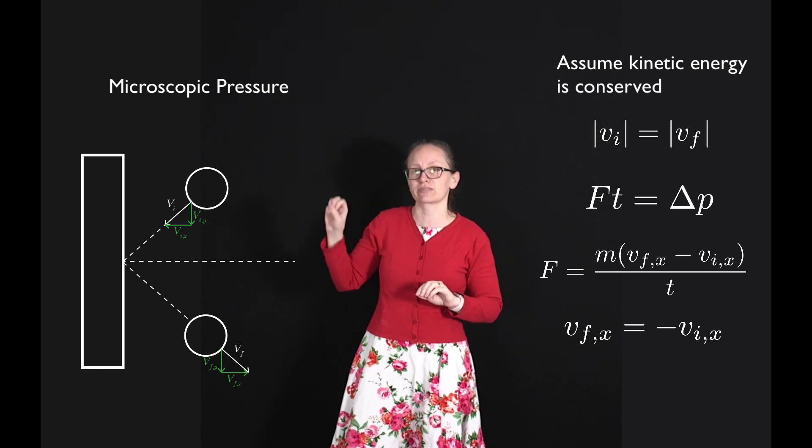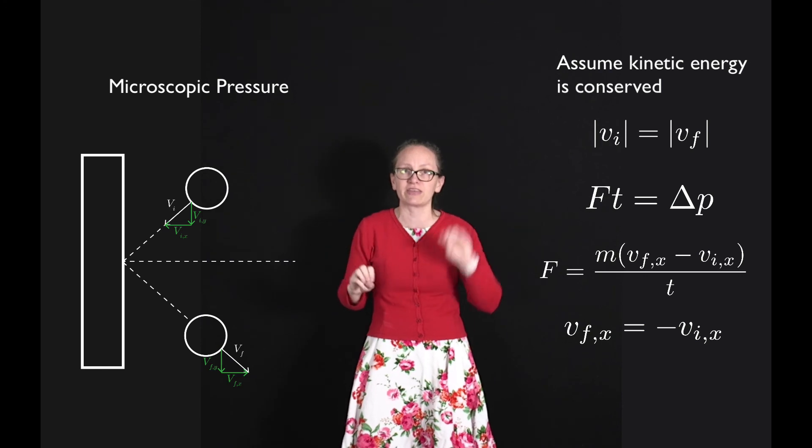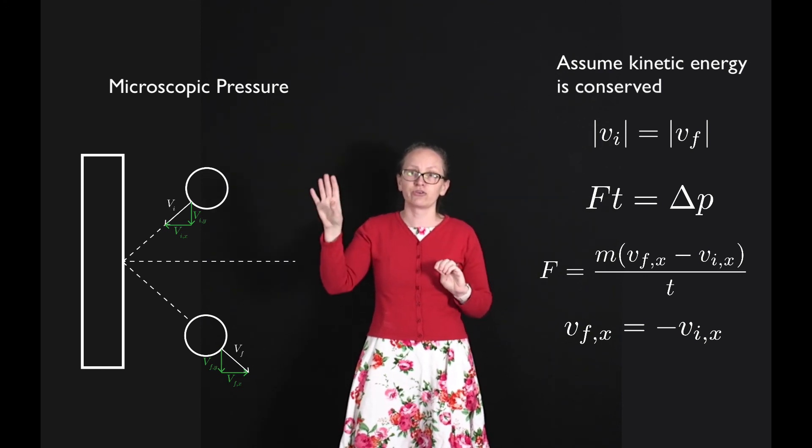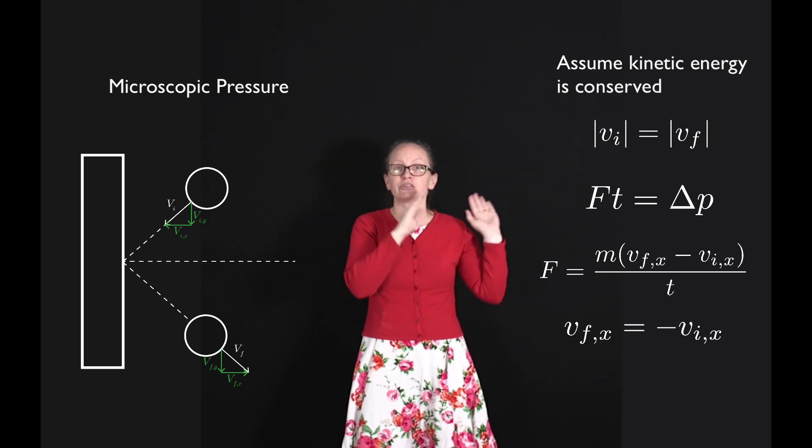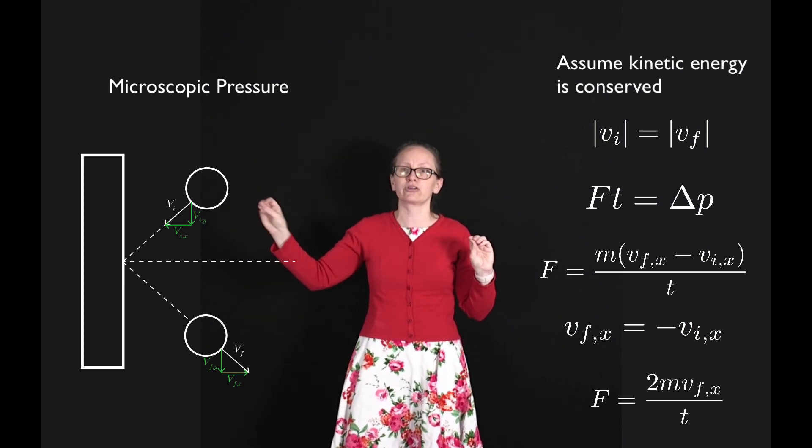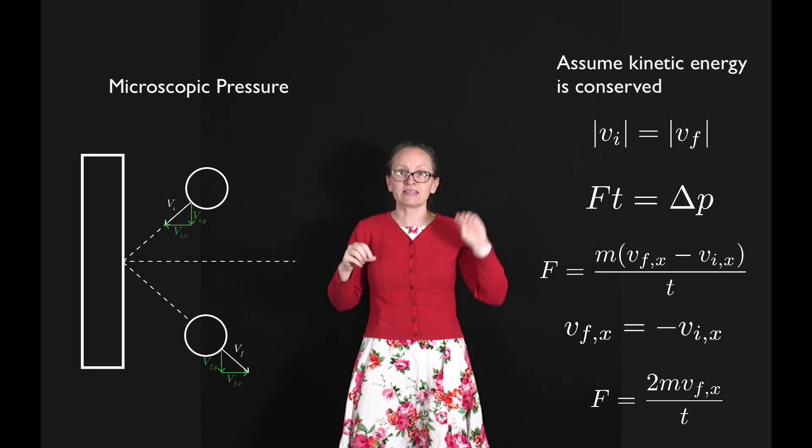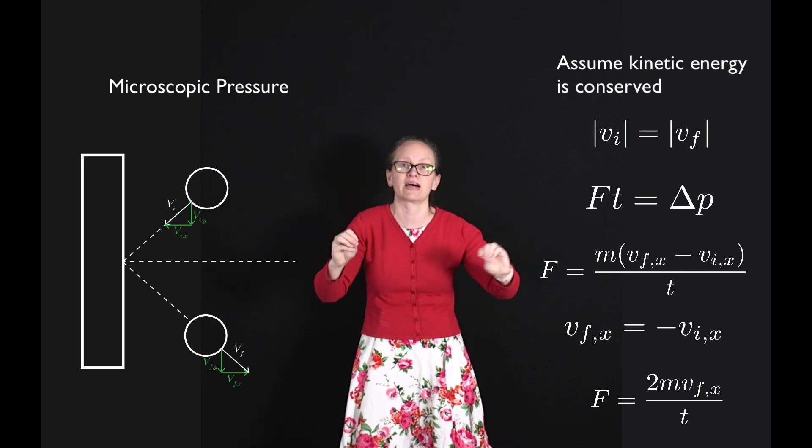Now because the speed is not changing, we know that the final speed in the x direction must be the same as the final speed in the y direction. And so since they're moving in opposite directions, we must have that vf of x is equal to minus vi of x. So we can substitute this into our equation for force now. And we get the force of that one molecule colliding with the wall is equal to 2m times the final velocity in the x direction divided by time.